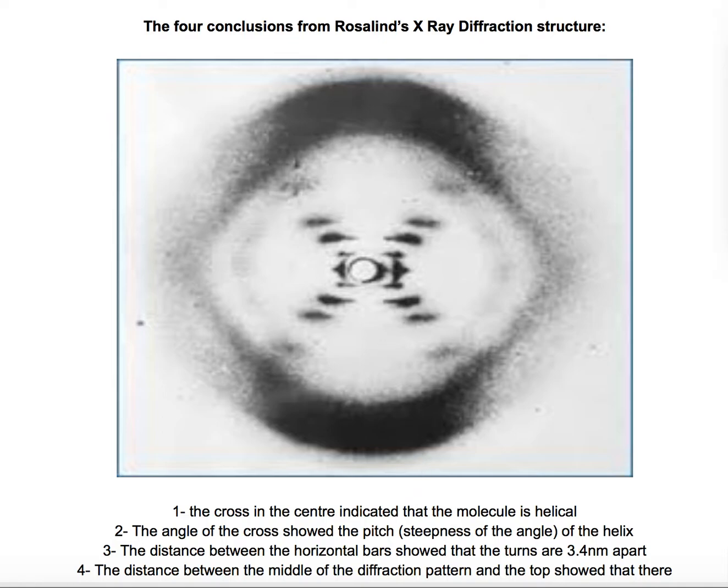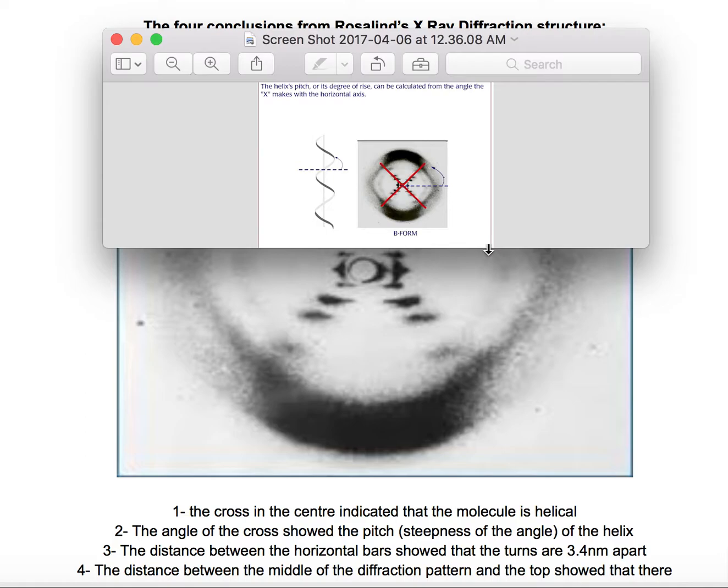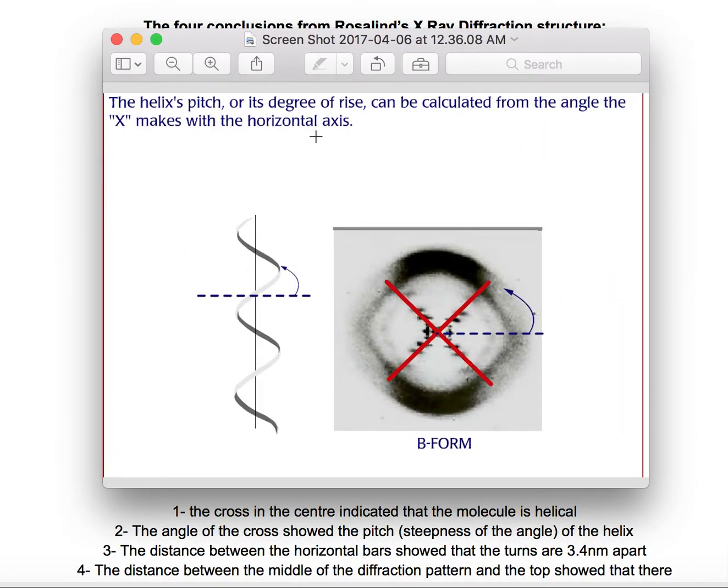This would show it better. The helix pitch or its degree of rise could be calculated from the angle this X makes. This would be the equivalent of the angle of the amplitude of the helix.